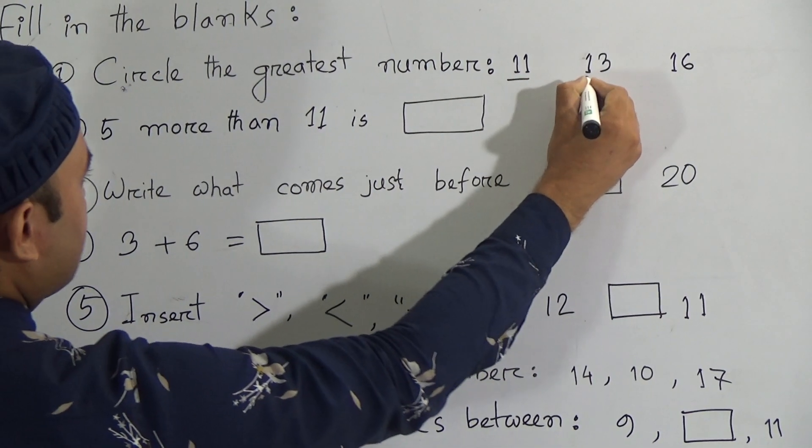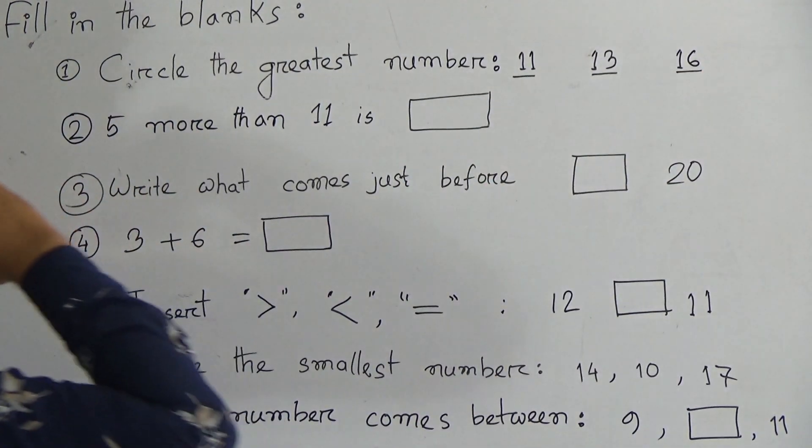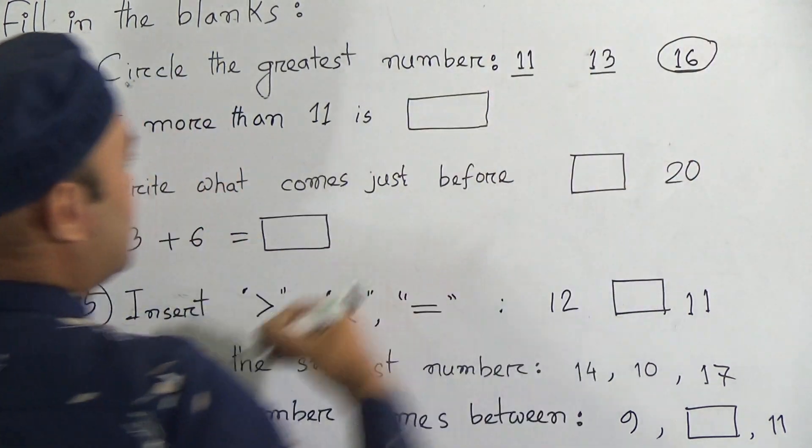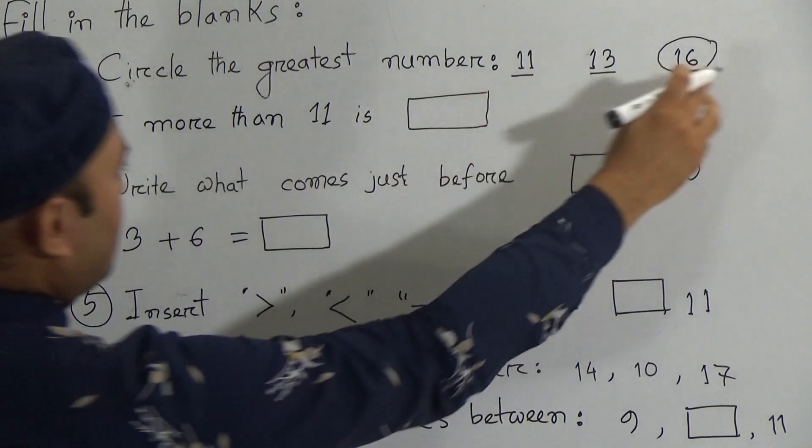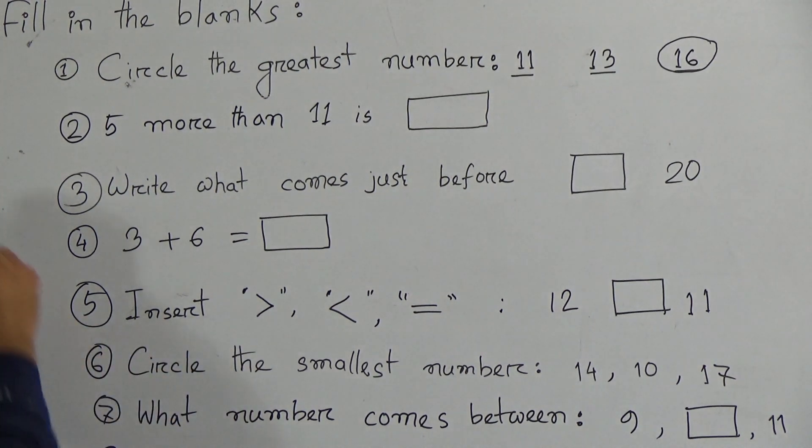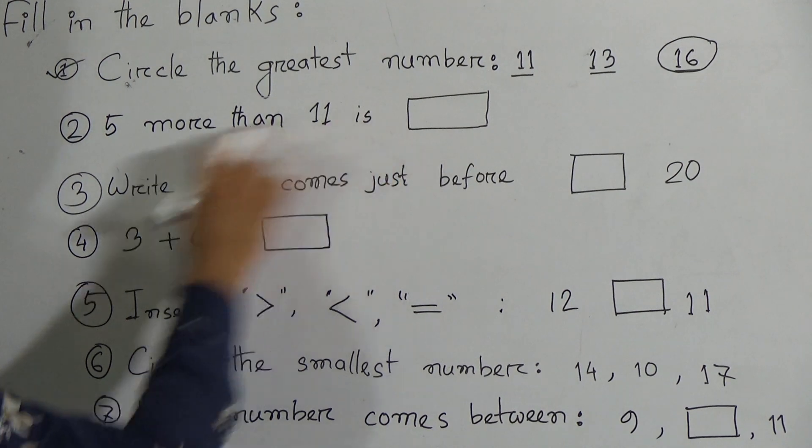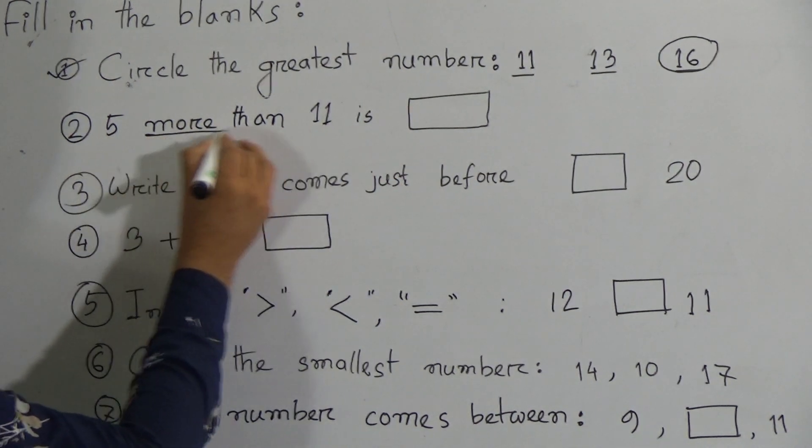And last one is 16. My dear students, here 16 is the greatest number. Have you understood this one? Now go to second one. Five more than 11 is... Five more than... More than means, my dear students, more than means you have to add.